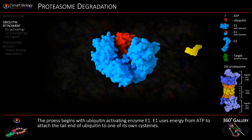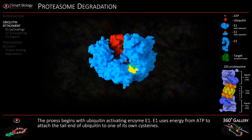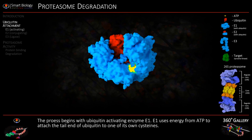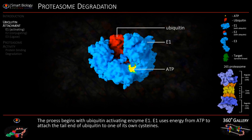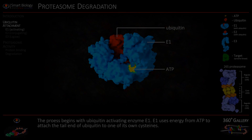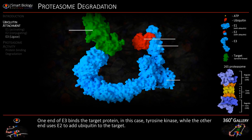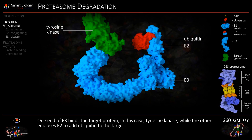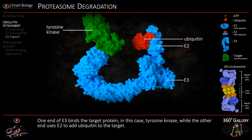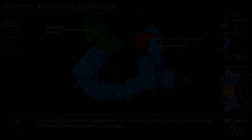E1 uses energy from ATP to attach the tail end of ubiquitin to one of its own cysteines. One end of E3 binds the target protein, in this case tyrosine kinase.